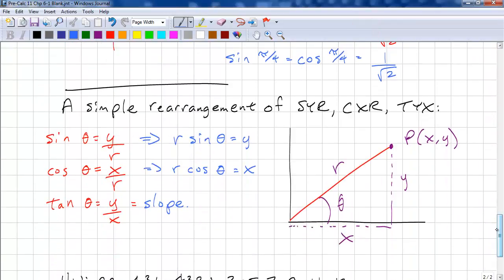If we simply rearrange Sir Kicks or Ticks, we move the r over to this side. We see that r sine theta equals y. And move the r over to this side, we see r cosine theta is equal to x. So, this is a simple formula that you might want to remember.